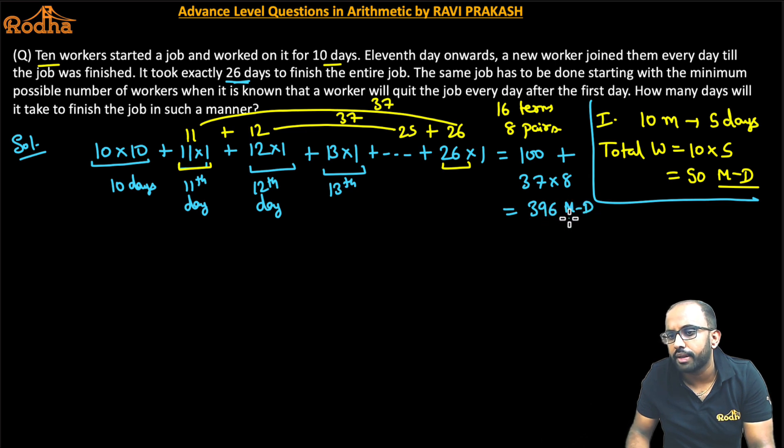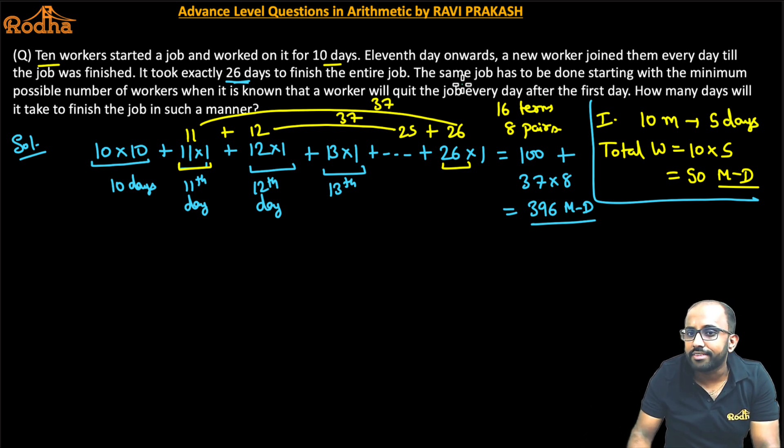So this work is 396. Okay, now what they're saying that the same job has to be done starting with the minimum possible number of workers. When it is known that a worker will quit the job every day. So if a worker will quit the job every day, so let's say for example, we start here with n members. So I start with n members, right? So first day there was n members. Second day, n-1, a worker is quitting the job every day, right?